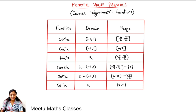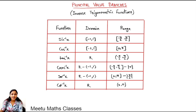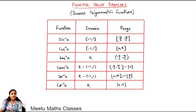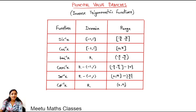The domain of cosec inverse x is the whole real line minus open interval minus 1 to 1, and the range is closed interval minus pi by 2 to pi by 2 except 0. The domain of sec inverse x is the whole real line except open interval minus 1 to 1, and the range is closed interval 0 to pi except pi by 2. The domain of cot inverse x is the whole real line and the range is 0 to pi.